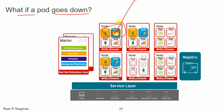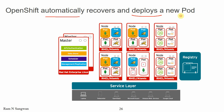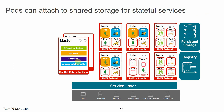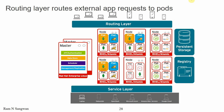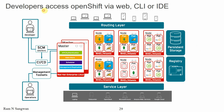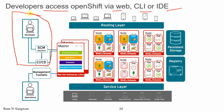If a pod goes down or a crash happens, OpenShift will automatically recover and deploy a new pod for you — that's the power of OpenShift. Pods can attach to shared storage for stateful services requiring persistent storage. The routing layer routes external app requests through to pods. Developers access OpenShift via the web console, CLI, or IDE. That's all for this introduction. The definition and architecture of OpenShift Container Platform have been covered. Thank you very much for watching.